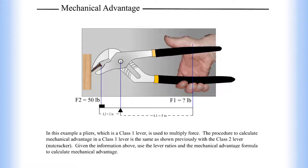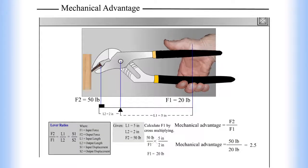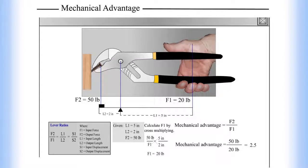Given L1 equals 5 inches, L2 equals 2 inches, and F2 equals 50 pounds, we calculate F1 by cross-multiplying. Here, F1 equals 20 pounds. The mechanical advantage equals F2 divided by F1, so the mechanical advantage is 50 pounds divided by 20 pounds, which equals 2.5.